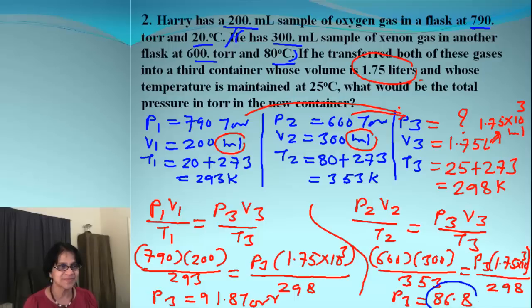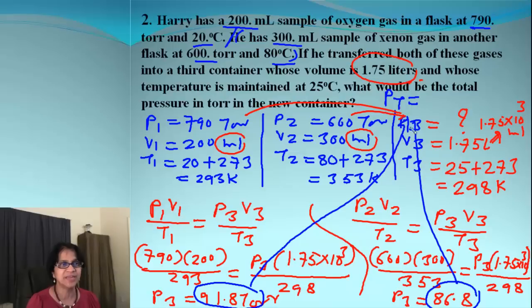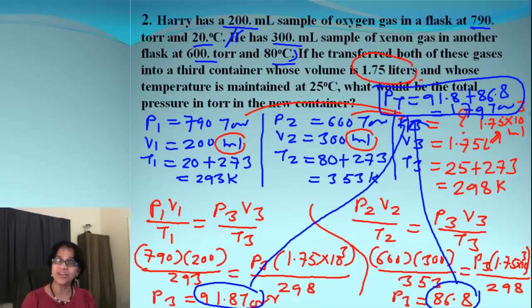So, we ended up getting two values of pressure for the gases when they are transferred to the new container. And, now, we are going to actually mix those values here. So, ideally, it will be the total pressure Pt, which we have, will be a combination of these two. So, it will be 91.8 plus 86.8, which is 179 total. Oh, so, that is the final pressure, which we are getting for the gas.